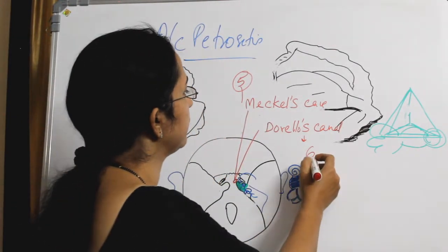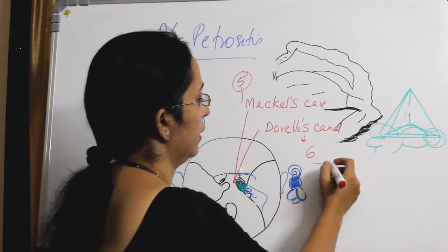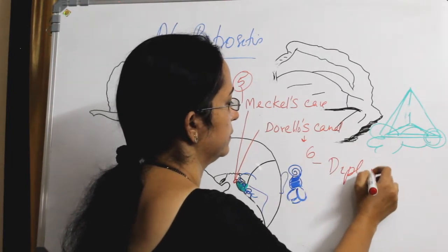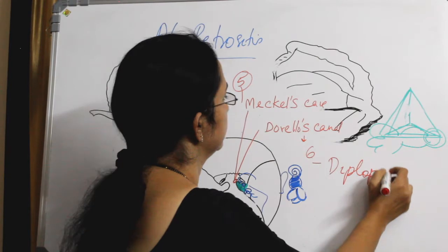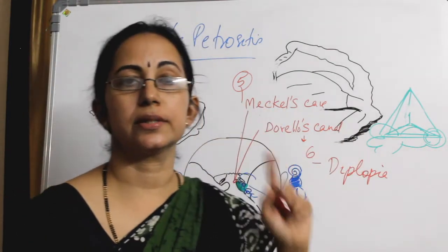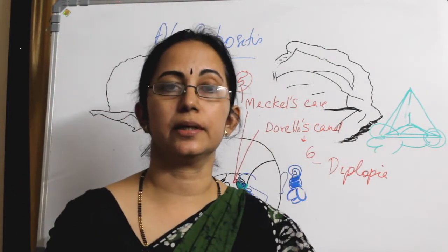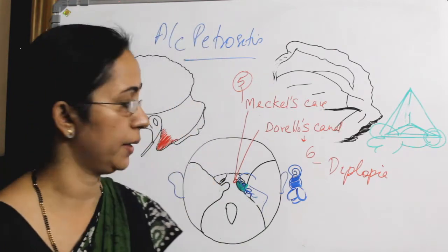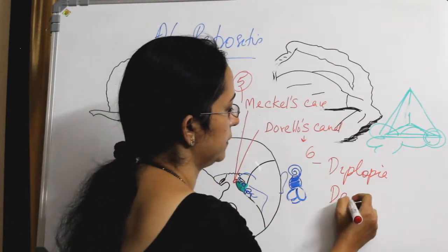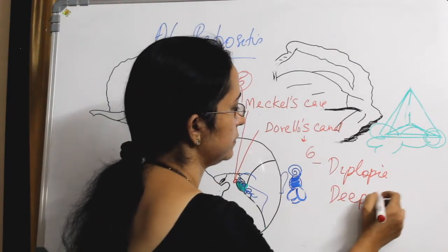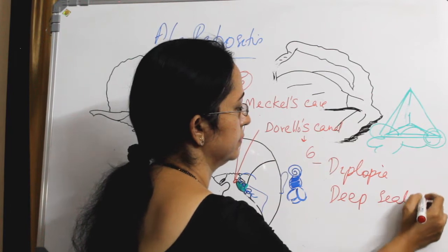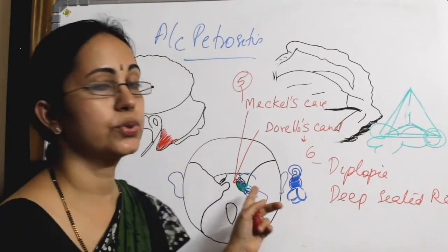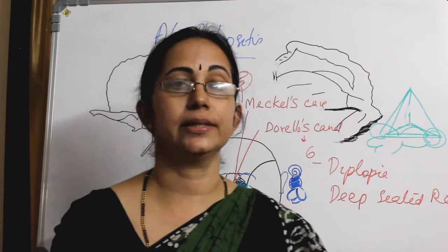So sixth nerve involvement leads to diplopia, and because of trigeminal nerve involvement there is deep-seated retroorbital pain. There will also be ear discharge.